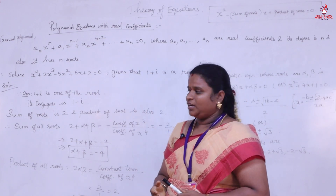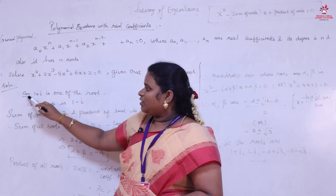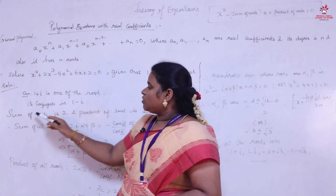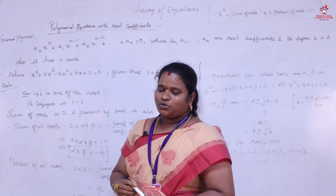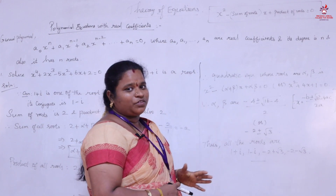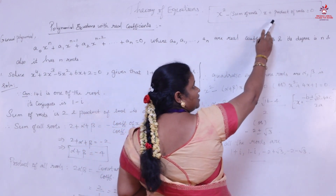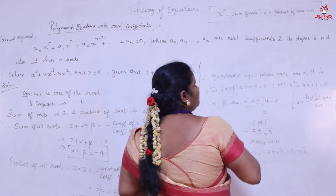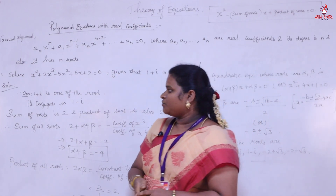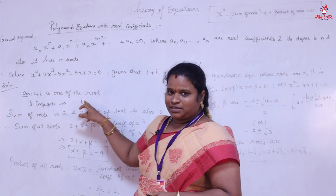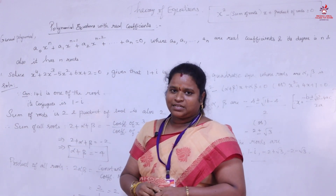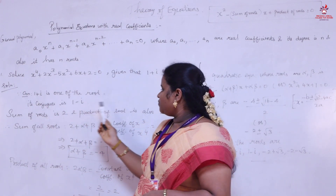Since the coefficients are real and 1 + i is a root, its conjugate 1 - i is also a root. We need to find the sum of roots and product of roots of these two complex roots. The sum is (1 + i) + (1 - i) = 2, and the product is (1 + i)(1 - i) = 2.